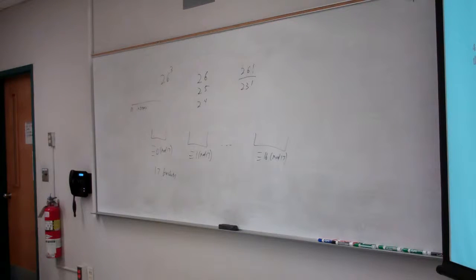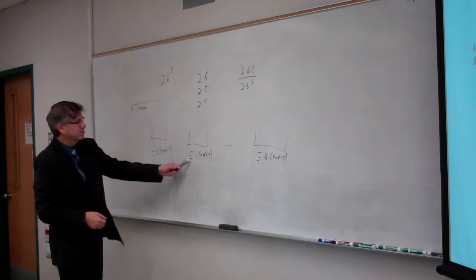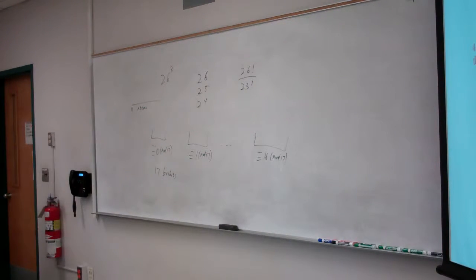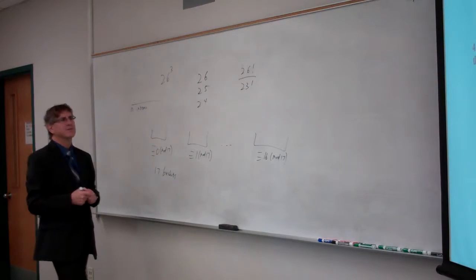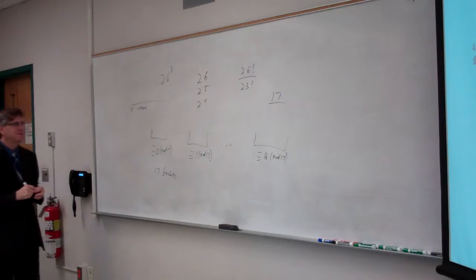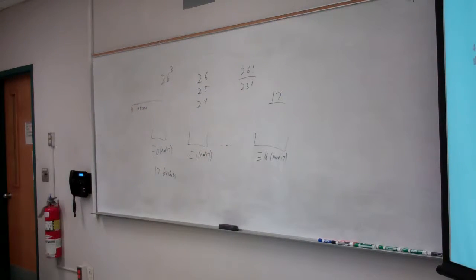And we know that everything is congruent to one of these 17 things mod 17, so you have 17 buckets. And you have n integers. And now the question is, how many elements can we place into these buckets such that no bucket contains more than one element? Because if we put two numbers into the same bucket, they're both congruent to the same thing, so they're congruent to each other.